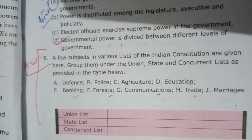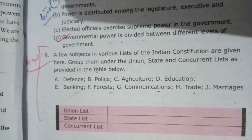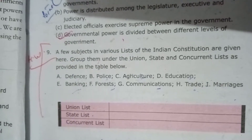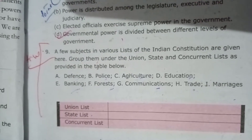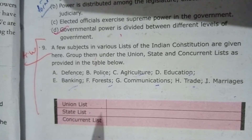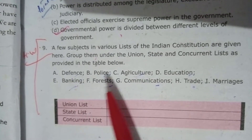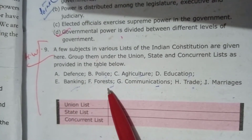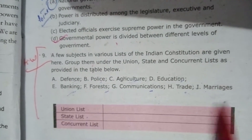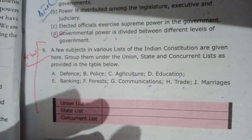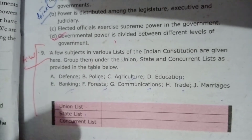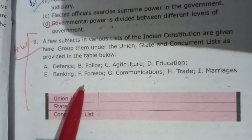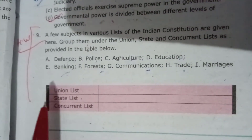When we say objective type question, students often only think of true/false, fill-in-the-blanks, and yes/no questions. But in the NCERT pattern you must know the format and how to answer this particular question. Here, points A, B, C are given with different subjects: defense, police, agriculture, education, banking, forest, communication, trade, and marriages. These subjects are governed by either the Union List, Concurrent List, or State List. You have to draw the diagram and fill in accordingly.